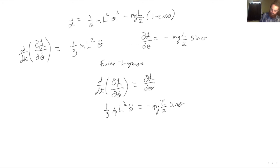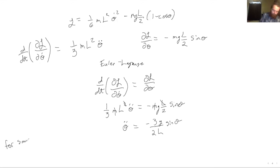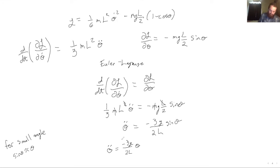The m's cancel and one of the l's cancels. Writing theta-double-dot by itself, you get theta-double-dot equals negative 3g over 2l sine theta. For small angles, the small angle approximation says sine theta is approximately theta, so this becomes theta-double-dot equals negative 3g over 2l times theta. This is exactly the same form as the harmonic oscillator, only now we have a factor of 3 over 2. So our resonant frequency is the square root of 3g over 2l.